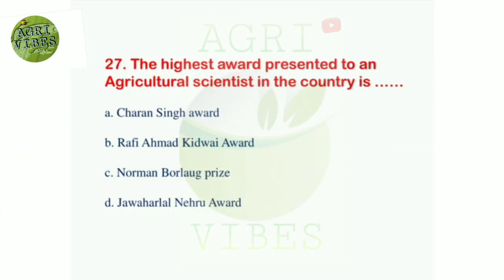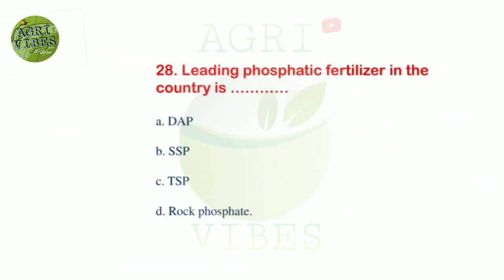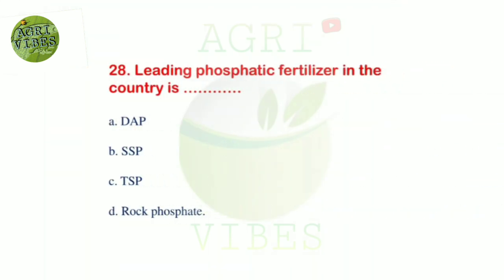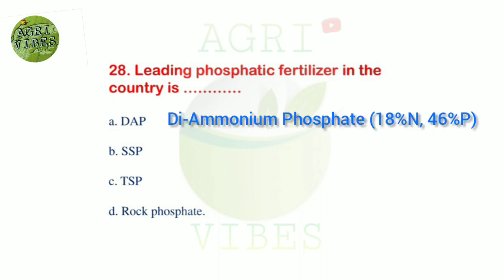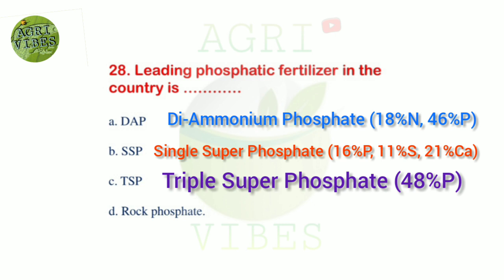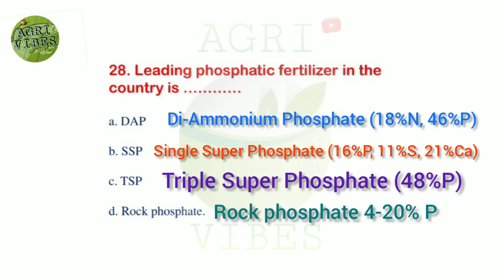Next question: the highest award presented to an agricultural scientist in the country is — options: Charan Singh award, Rafi Ahmed Kidwai award, Norman Borlaug award, and Jawaharlal Nehru award. Correct answer is option B, Rafi Ahmed Kidwai award. Next question: the leading phosphatic fertilizer in the country is — options: DAP, SSP, TSP, and rock phosphate. Correct answer is option A, DAP — diammonium phosphate.